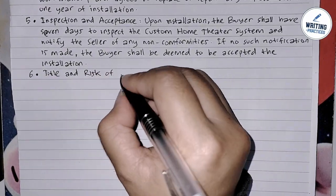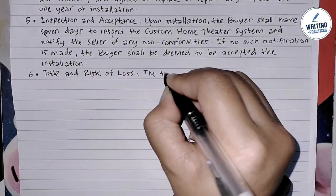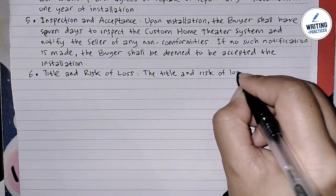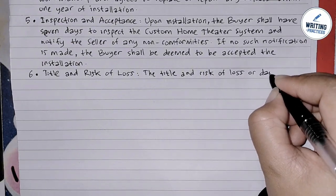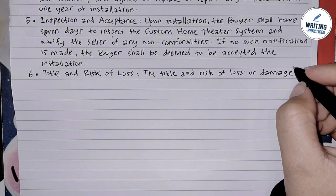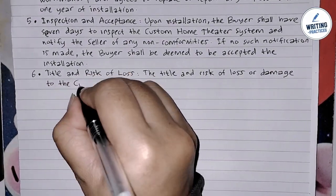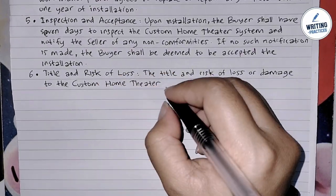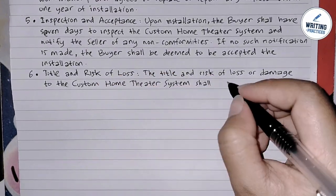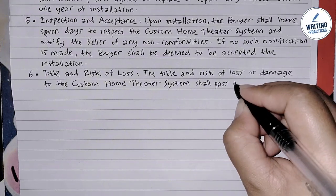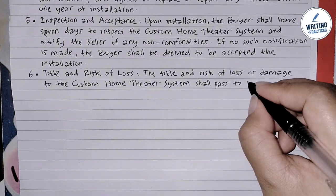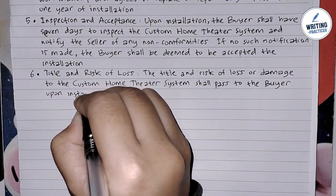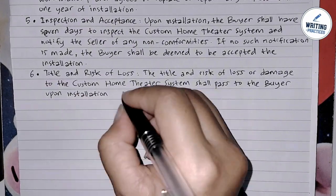Point six is about title and risk of loss. Define when ownership of the product transfers to the buyer and who bears the risk of loss during the transaction. This ensures clarity on when the buyer assumes full responsibility for the product. For example: '6. Title and Risk of Loss: The title and risk of loss or damage to the custom home theater system shall pass to the buyer upon installation completion.'